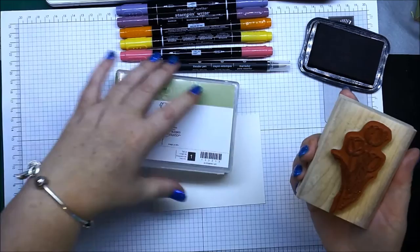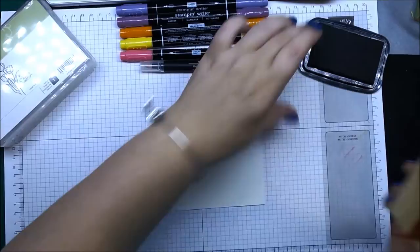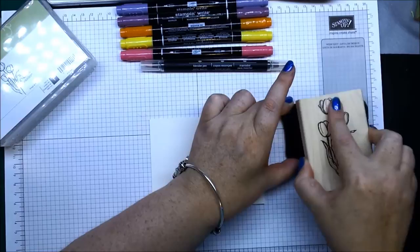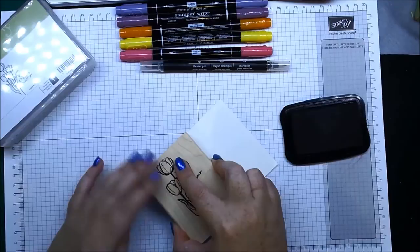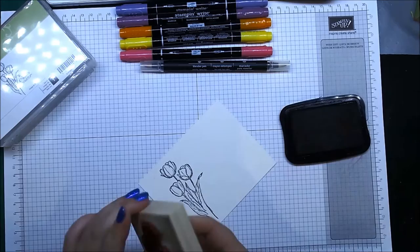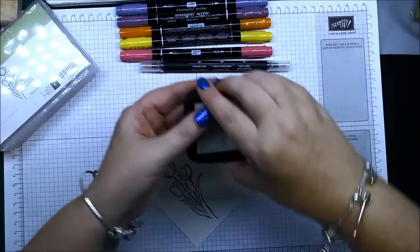This is the Blessed Easter tulip stamp. I love the tulips. You need your Jet Black StazOn ink pad. You need to use StazOn because it's a permanent ink pad and it won't run once it's dry. So to stamp that onto there, lovely. I'll just pop that away so it doesn't dry up too quickly.